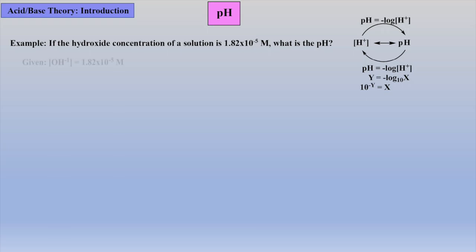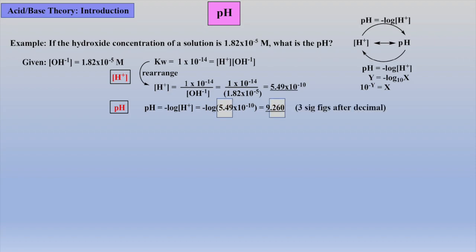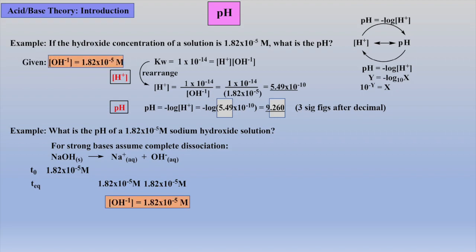In the next example, we are given the concentration of hydroxide and asked for the pH. First we convert the hydroxide to proton concentration using our Kw expression. Then we can take the negative log of the proton concentration to get our final pH. Notice that within our final answer, we have three sig figs after the decimal point because we took the log of three sig figs. Again, it should be noted that this problem could have been worded differently — for example, what is the pH of a 1.82 times 10 to the minus 5 molar sodium hydroxide solution? Because sodium hydroxide is a strong base, it will be completely dissociated. Thus, the hydroxide concentration will be 1.82 times 10 to the minus 5 molar, which allows the same problem-solving strategy.